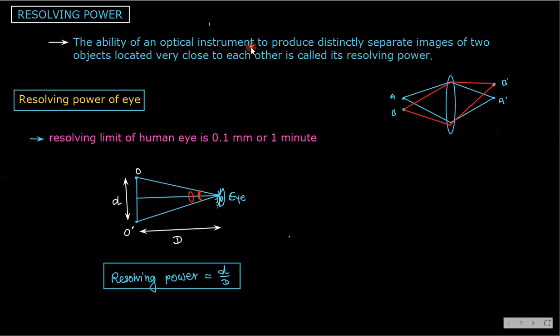So resolving power is the ability of an optical instrument to produce distinctly separate images of two objects placed very close to one another.